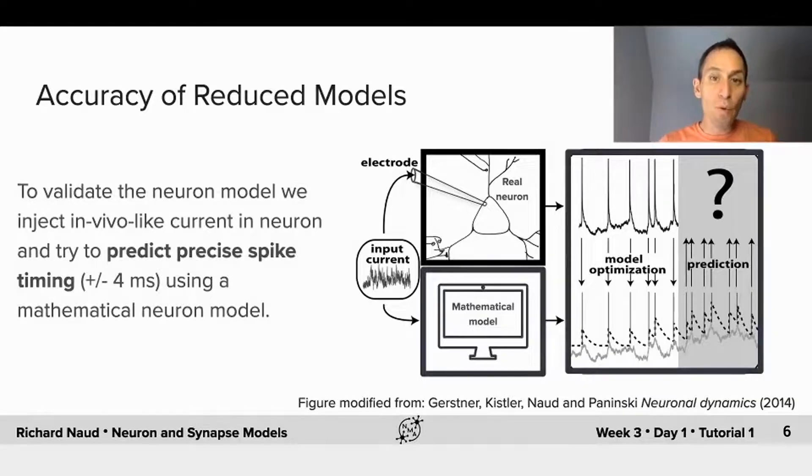To do this, we inject a time-dependent current in real neurons, taken in slices from the cortex. The neuron receives an input current that looks a lot like what it would normally receive in vivo. The response are spikes in time. The goal of our mathematical neuron model is to predict those spikes, that is, to use the knowledge of the input current, and some of the response to calibrate the model parameters, and then let the model evolve, let it spike, and test whether the spike times arrive at the correct place.